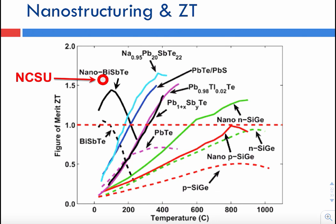Improving the ZT is where nanotechnology comes to help. Before we talk about how nanotechnology helps, let's look at this figure of merit plot, which shows the ZT figure of merit of a variety of materials as a function of ambient temperature. This is a very large temperature range going from zero to 1000 degrees Celsius.